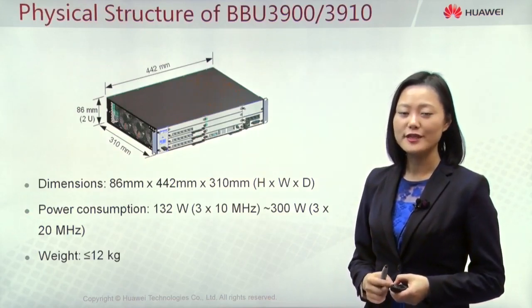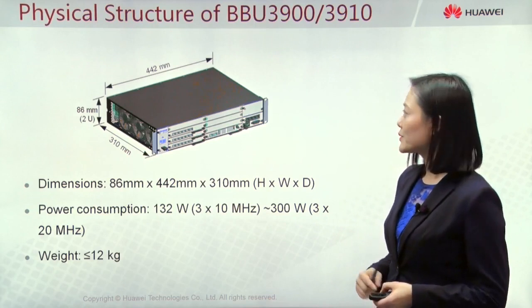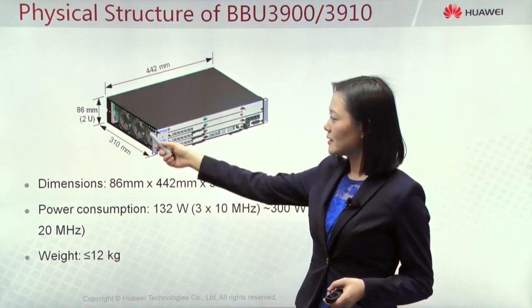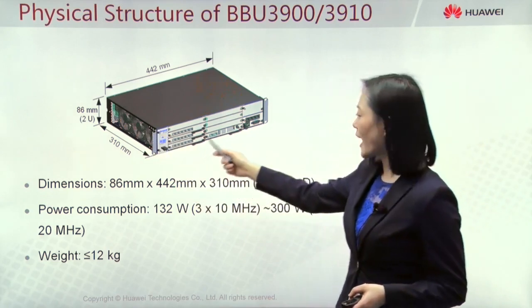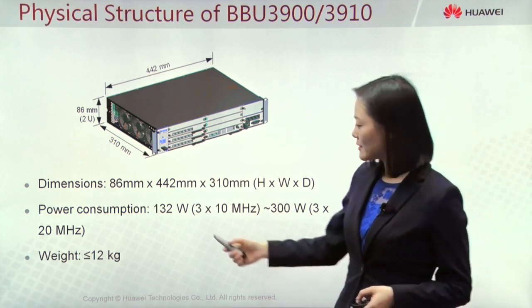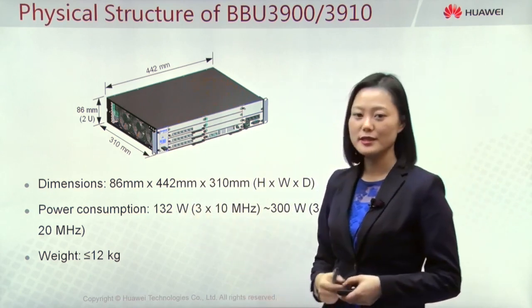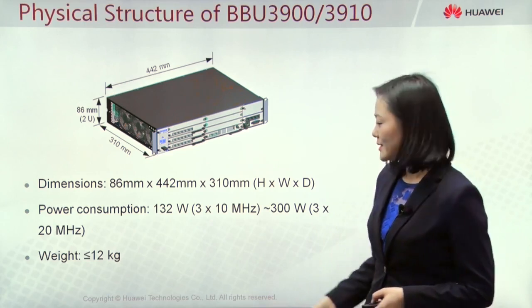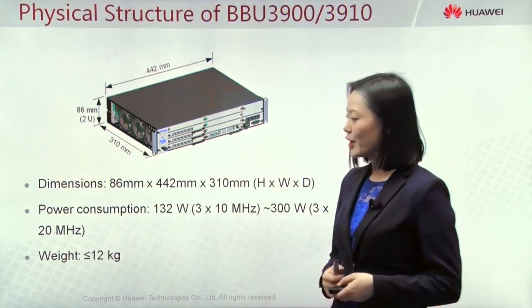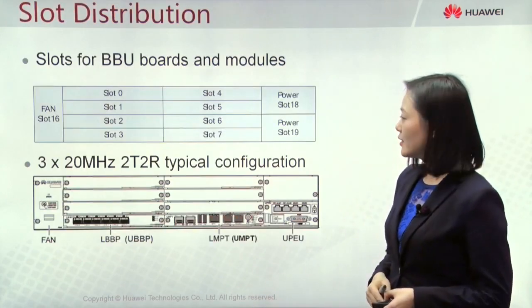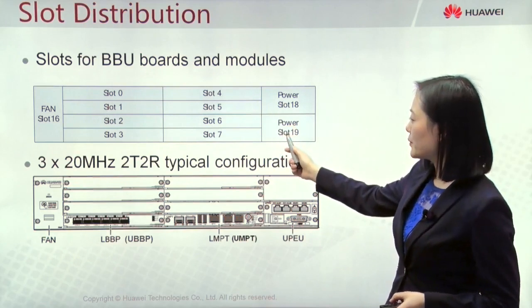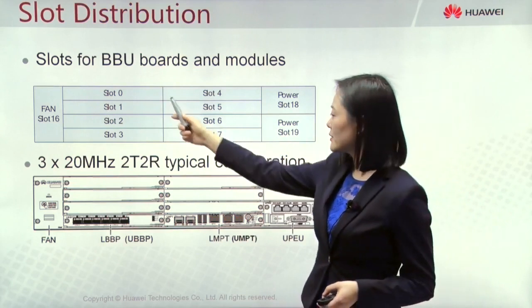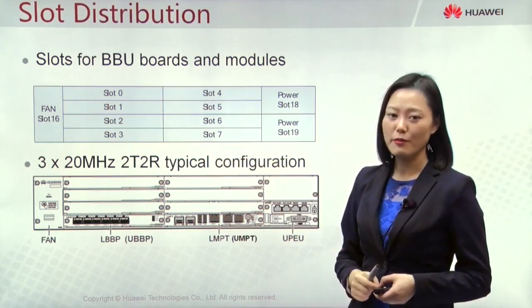Now let's check the physical structure of BBU-3900 and BBU-3910. The dimension is 2U height and 19 inch length. The power consumption is between 132V to 300V depending on the configuration, and the weight is less than 12 kg. From the front panel of the BBU, we can see there are totally 11 slots — Slot 0 through Slot 7 are used for normal boards.